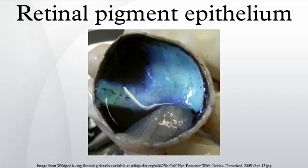Immune privilege of the eye. The inner eye represents an immune-privileged space which is disconnected from the immune system of the bloodstream. The immune privilege is supported by the RPE in two ways. First, it represents a mechanical and tight barrier which separates the inner space of the eye from the bloodstream. Second, the RPE is able to communicate with the immune system in order to silence immune reactions in the healthy eye, or, on the other hand, to activate the immune system in the case of disease.